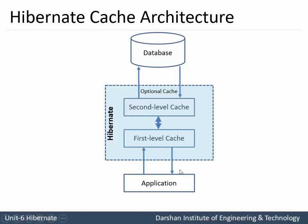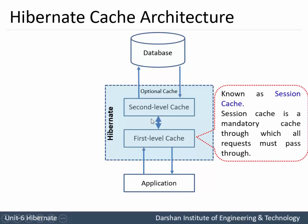As shown in the diagram, Hibernate first level cache is also known as a session level cache. For example, if the application wants to perform a read operation, it will directly go to the first level cache instead of hitting the database. If the object is not found in the first level cache, it will search the second level cache. If it is still not found in the second level cache - that is a cache miss - then it will go to the database and the object is retrieved.